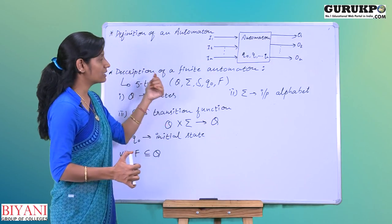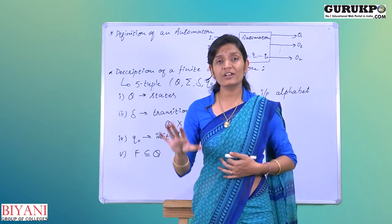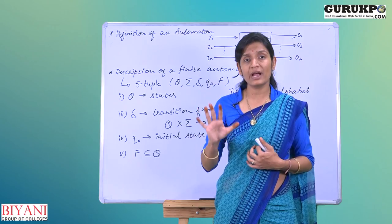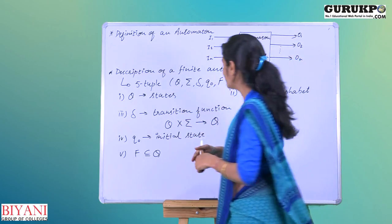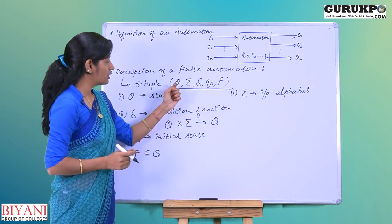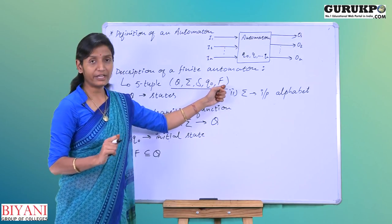Let us see the description of finite automata. How we will describe? We can describe the automata in 5 tuple - 5 entities through which we can describe it. This is the 5 tuple that we can use for the automata: capital Q, summation, delta, Q naught and F.